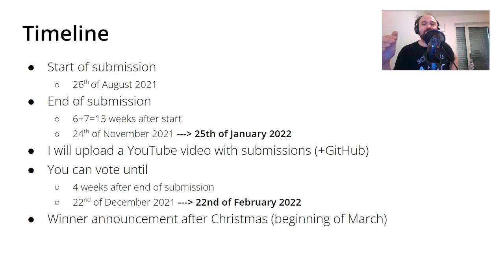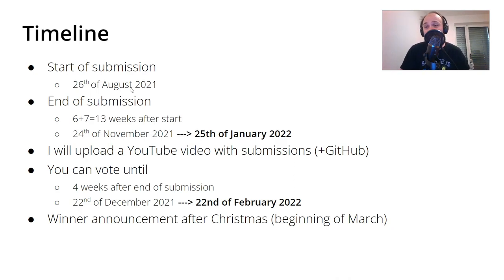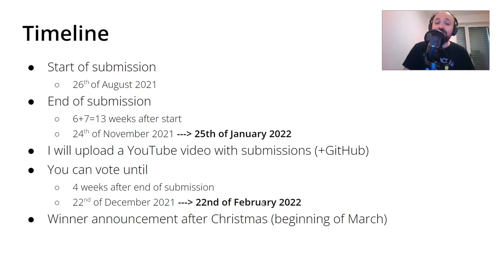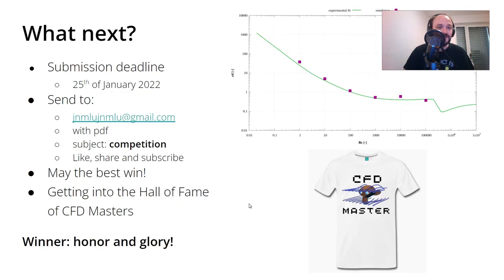Regarding the modified timeline: I thought I announced this on the 26th of August 2021, but that didn't work out very well, and the original end of submission was end of November. Now I've moved this to the end of January, so you should have a long period to take your time and run your simulations. I will collect your submissions, upload a video with the submissions plus the PDFs to my GitHub account, and then viewers can vote for four weeks — so not until December but actually February — and the winner will be announced beginning of March, or perhaps end of February.